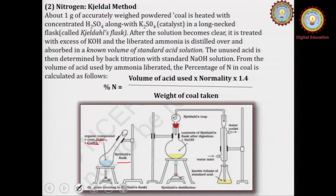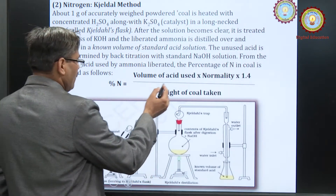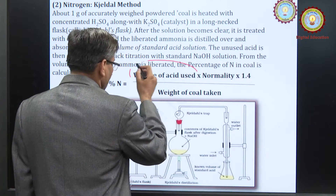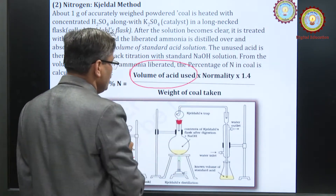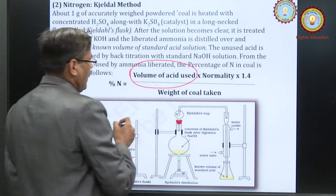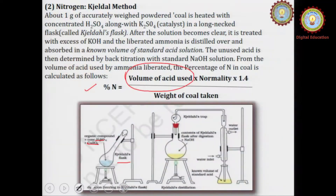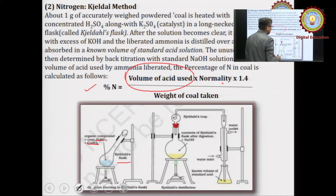The ammonia is passed into H₂SO₄, and after titration we get the volume of acid used for neutralization of ammonia. Nitrogen percentage is calculated as: (volume of acid used × normality of acid × 1.4) / weight of coal.